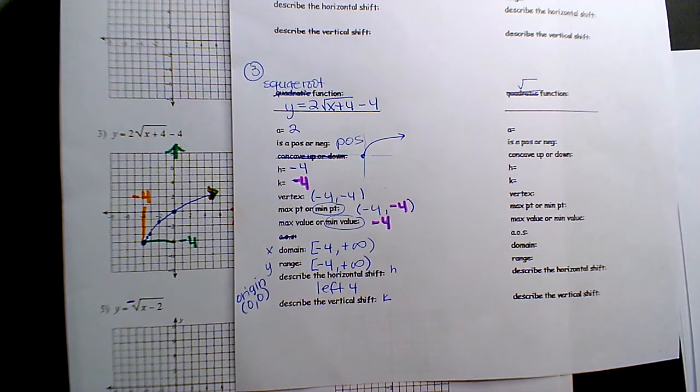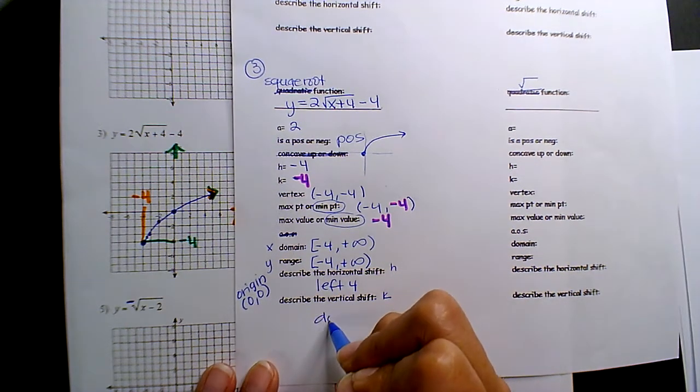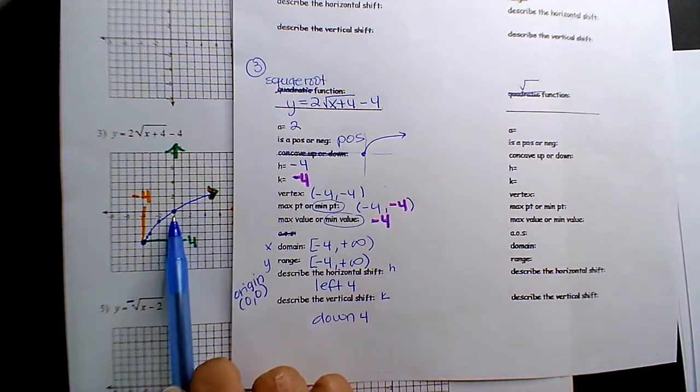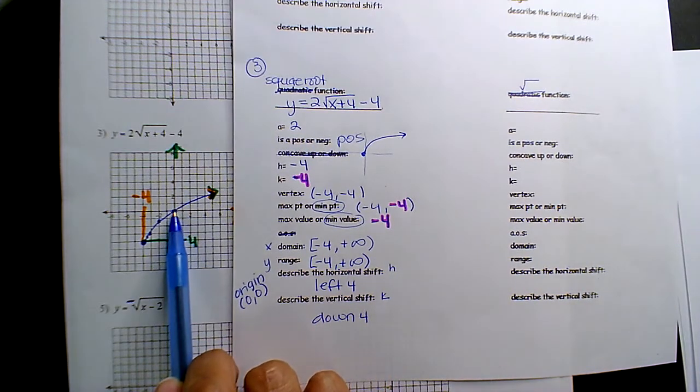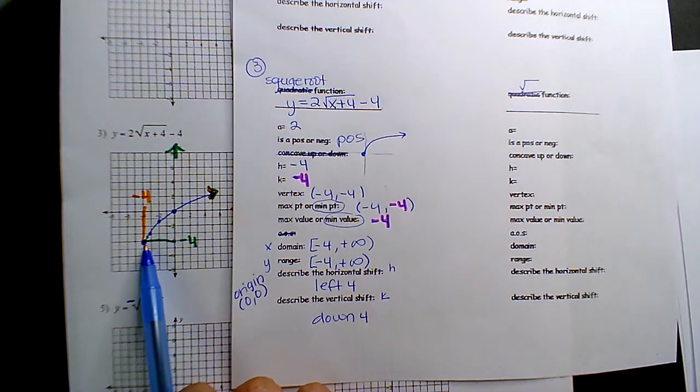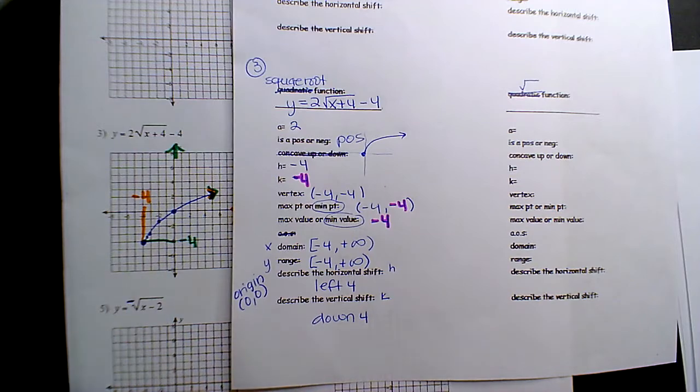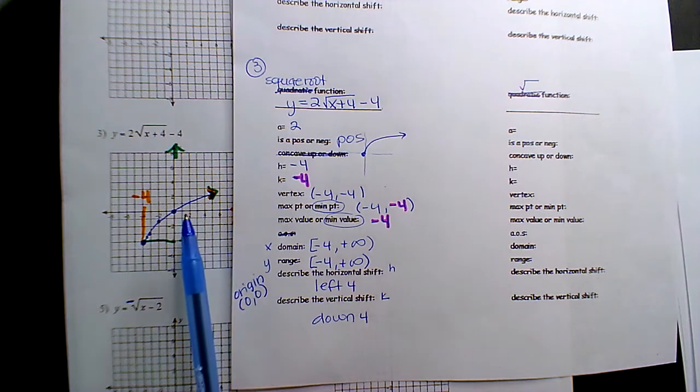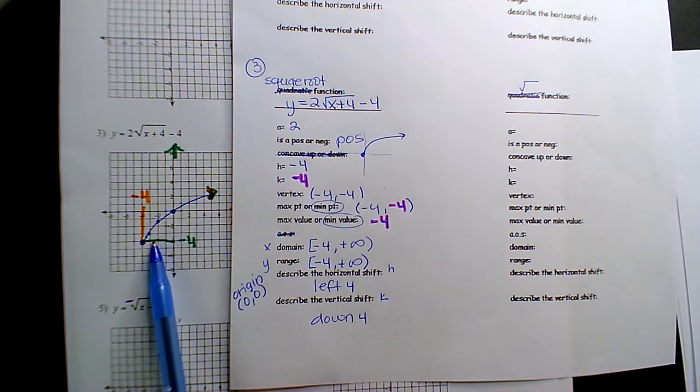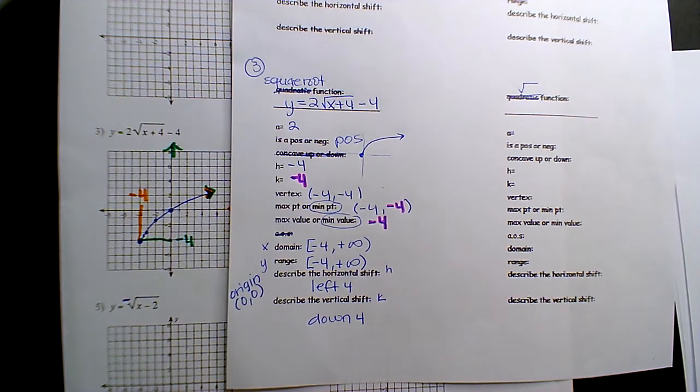And then what's my vertical shift? Down four, because it's negative four. And so, instead of the parent graph being at zero, zero, this function is left four, down four, and that's a new location to the vertex point. And that's why sometimes the vertex point is called a locator point, because instead of it being at zero, zero, the origin, the new location, right? Critical points, locator points. Yeah?